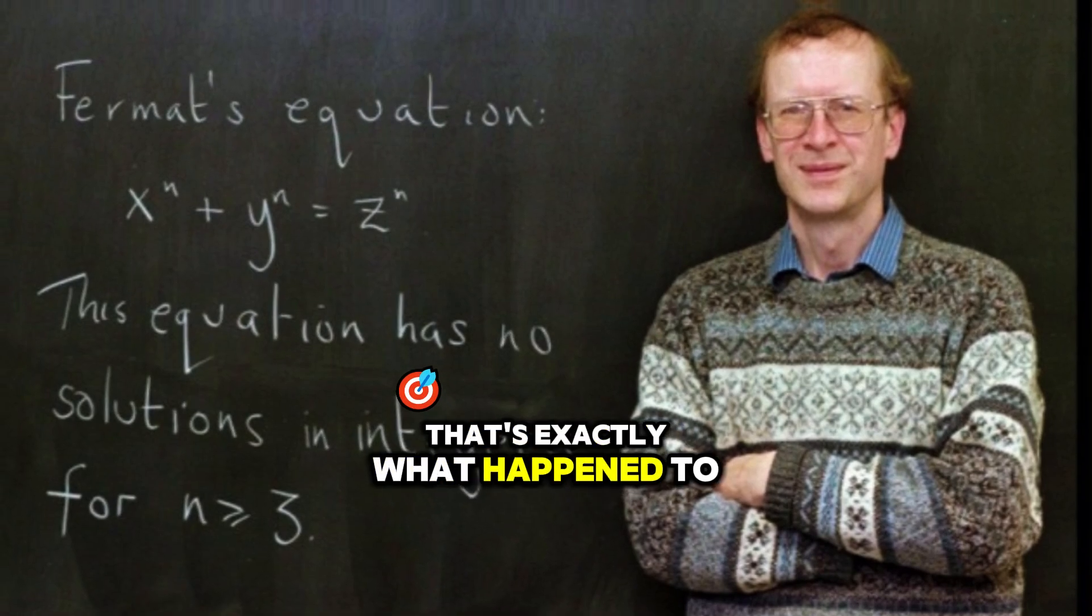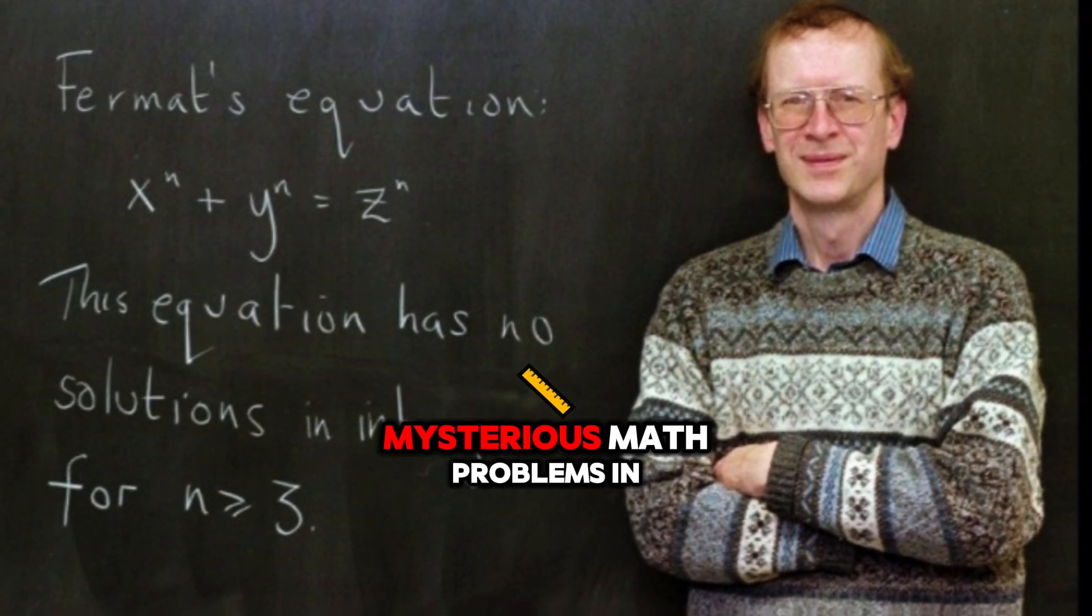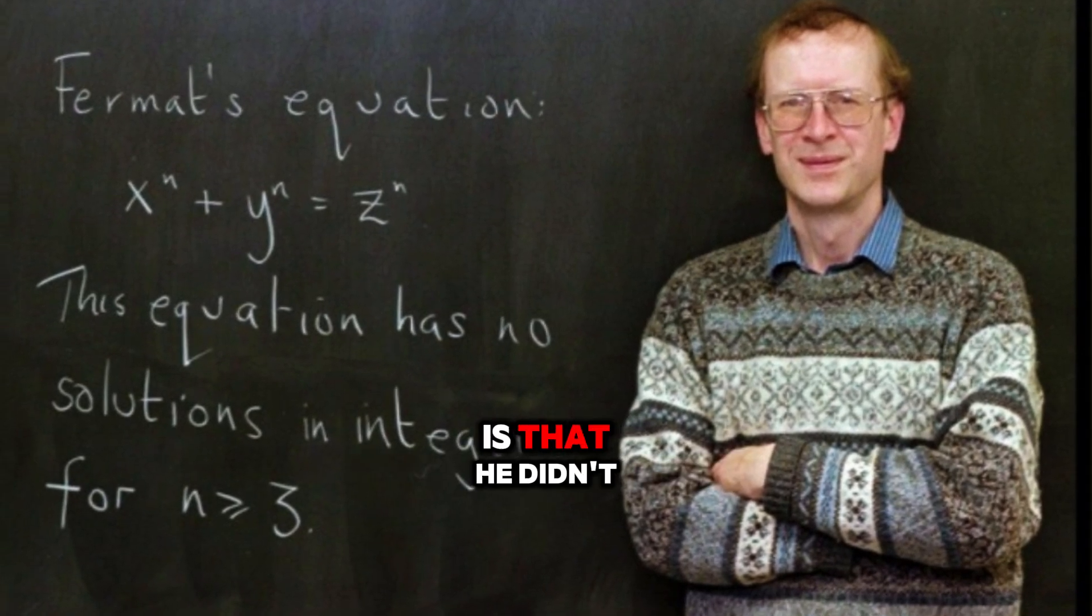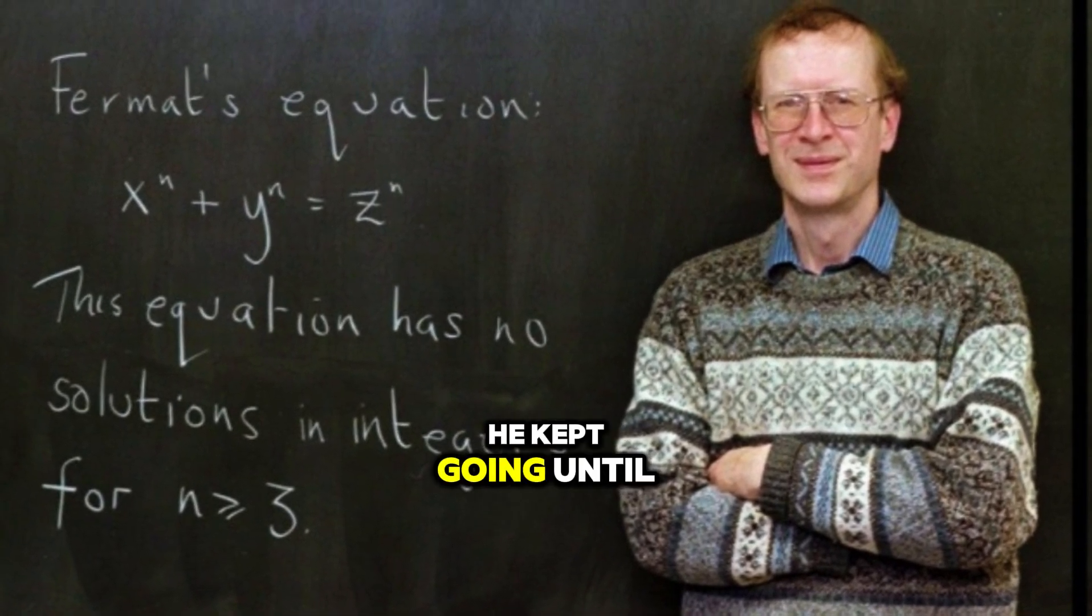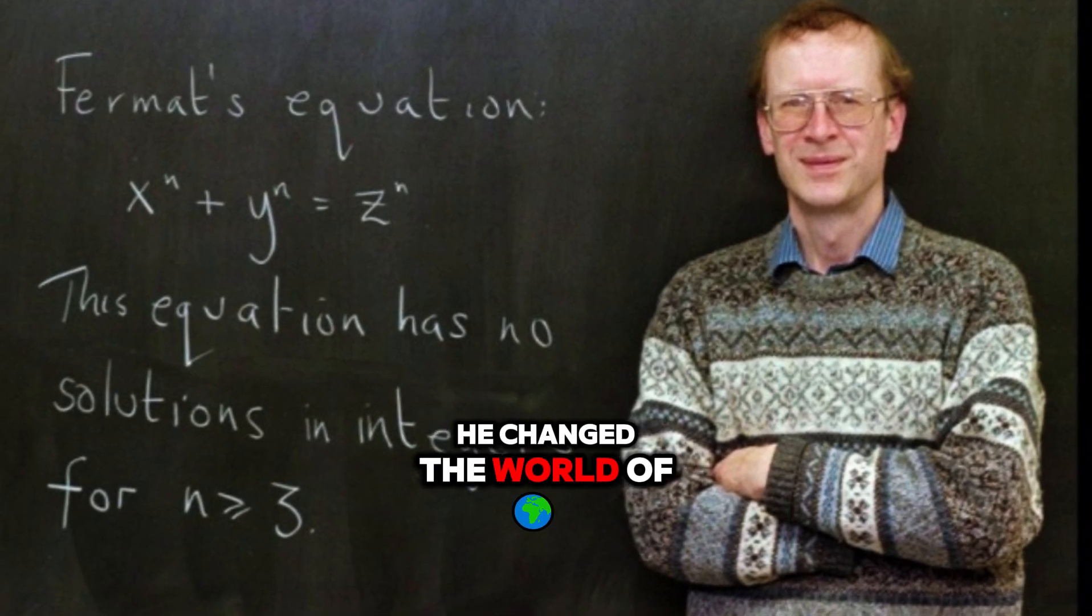That's exactly what happened to Andrew Wiles when he solved one of the most famous, mysterious math problems in the world. And what's even more incredible is that he didn't give up. He kept going until he got it right, and in doing so, he changed the world of mathematics forever.